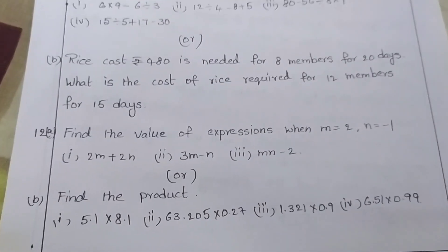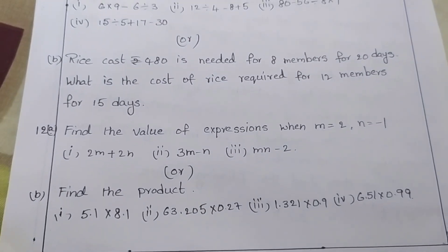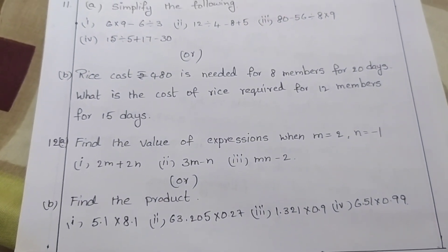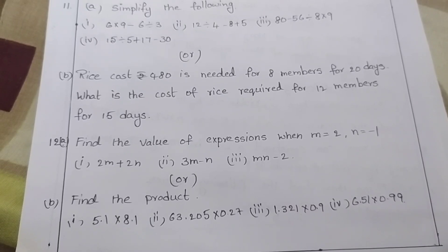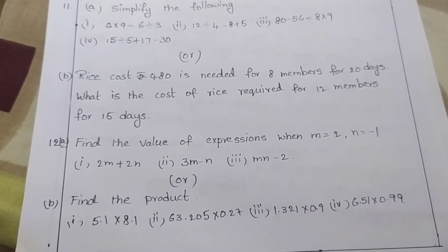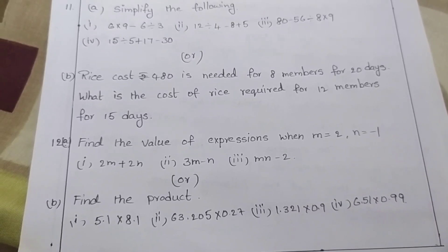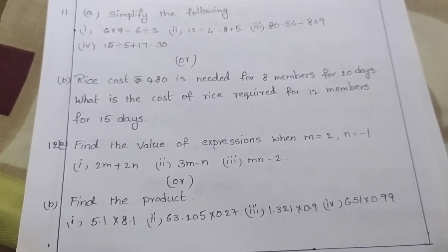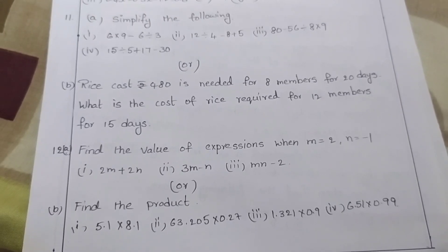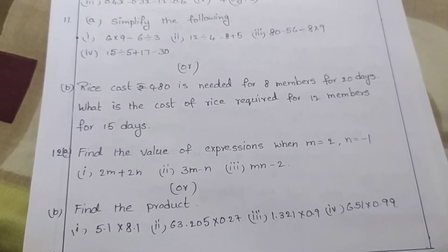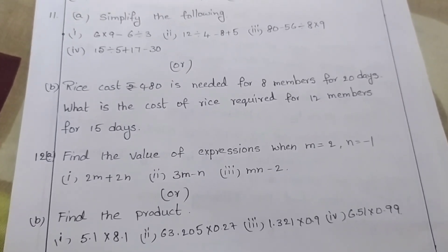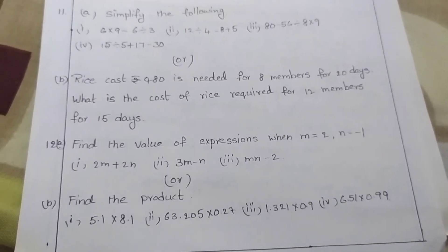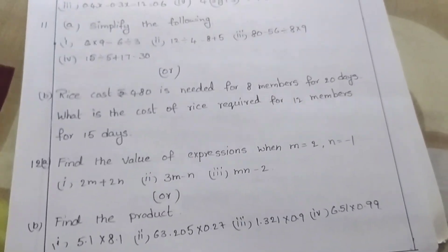Find the product: first, 5.1 into 8.1; second, 63.205 into 0.27; third, 1.321 into 0.9; fourth, 6.51 into 0.99.